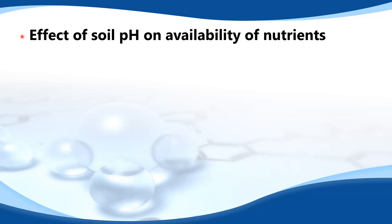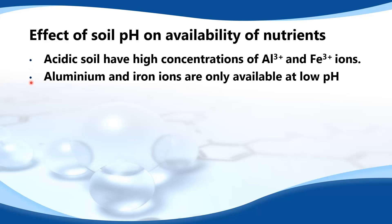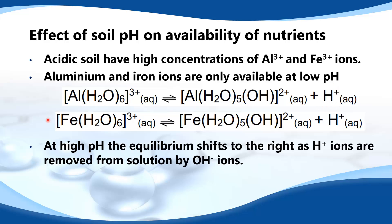Next we look at the effect of soil pH on the availability of plant nutrients. Acidic soils have high concentrations of Al³⁺ and Fe³⁺ ions. Aluminium and iron ions are only available at low pH. Because of the high charge density of Al³⁺ and Fe³⁺ they form weakly acidic solutions. At high pH the equilibrium in these reactions shifts to the right as the H⁺ ions are removed from solution by the OH⁻ ions.